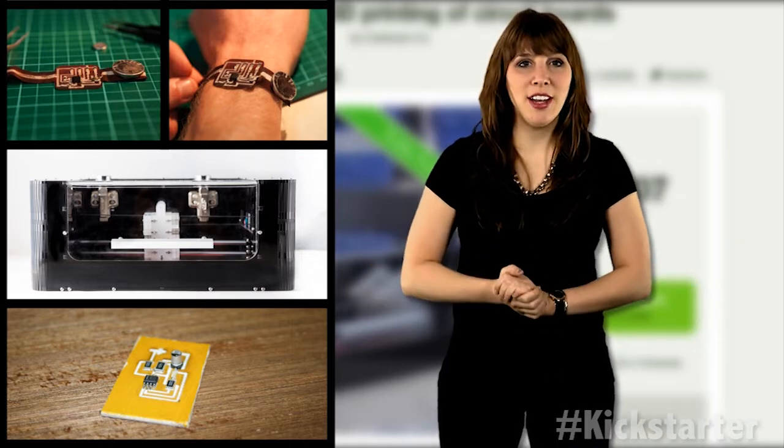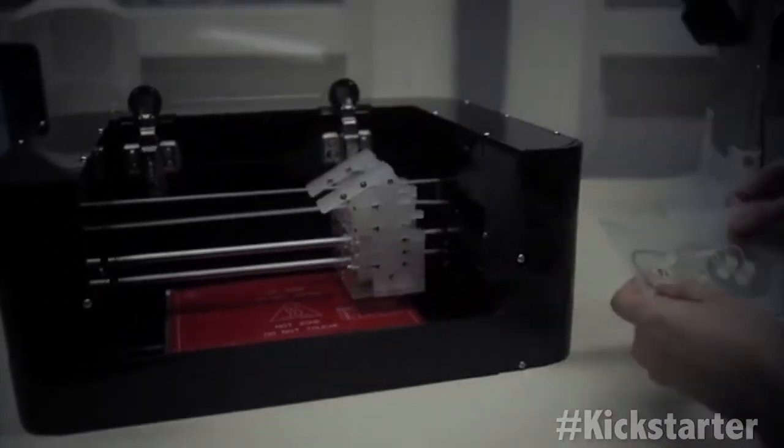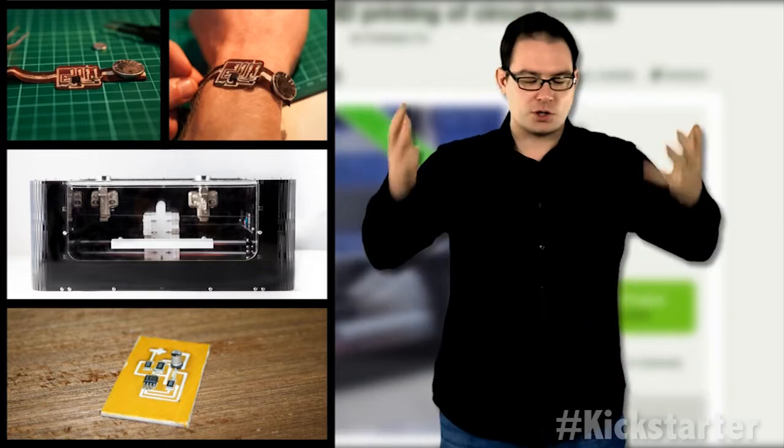You can make wearable electronics and print circuit boards on paper. Using capacitive touch sensors, Cartesian printed a functional Super Nintendo controller on paper. Super what? I'm so old!